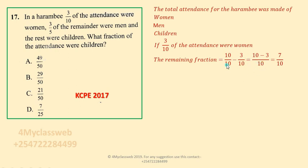Subtracting in the normal way: you take 10, divide by 10 to get 1, then multiply by 10 to get 10. Then you take 10, divide by 10 to get 1, multiply by 3 to get 3. So 10 minus 3 over 10 gives you the remaining fraction of 7 out of 10.